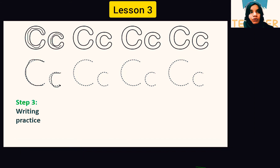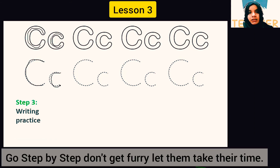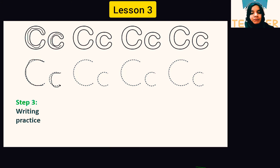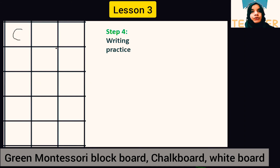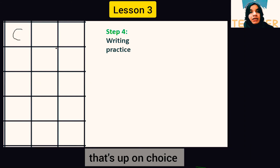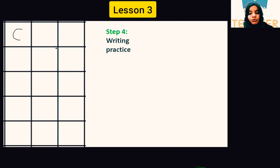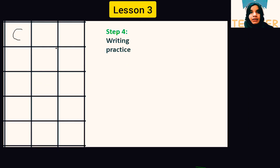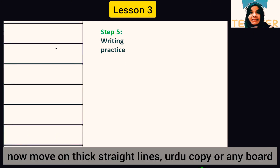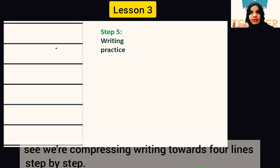First do hollow tracing, then move to dotted tracing. Let them take their own time — no need to rush, step by step. Step four: introduce writing practice using big block copy, Montessori green board, whiteboard, or A4 paper. They can trace in blocks with crayons or on the blackboard with chalk. Start big, then compress them to write in blocks, then in straight lines.